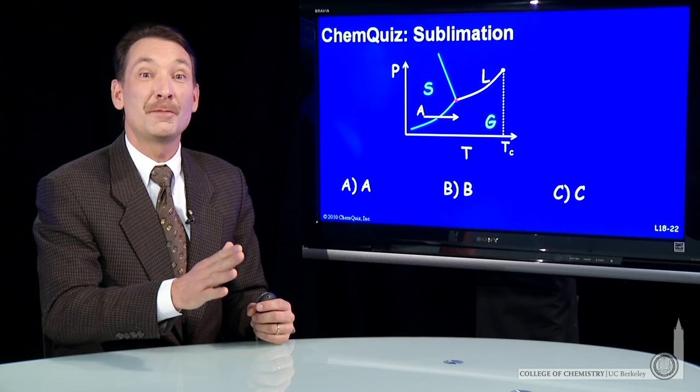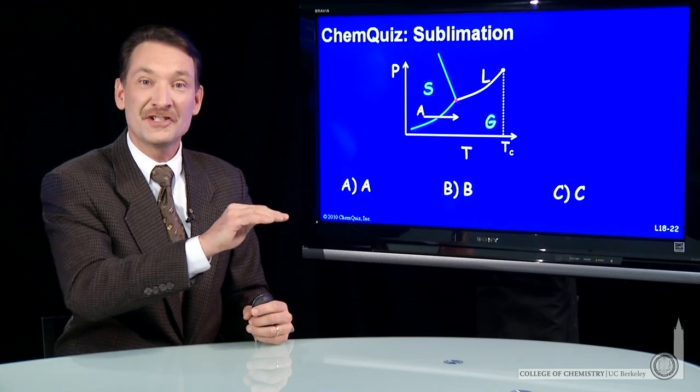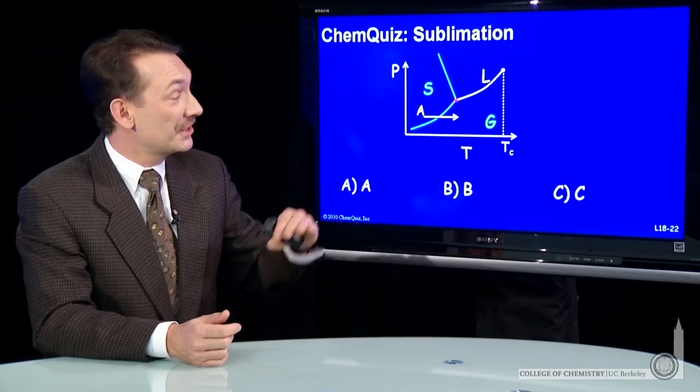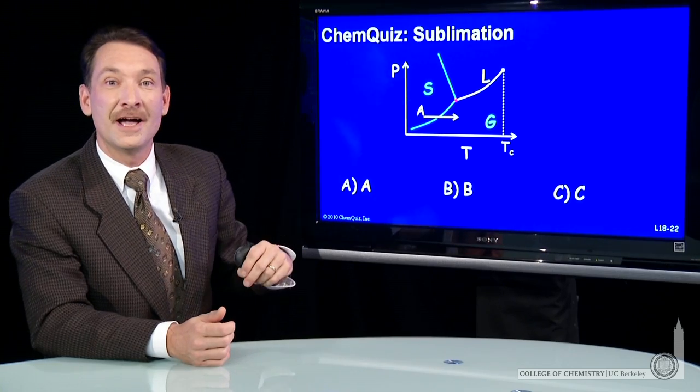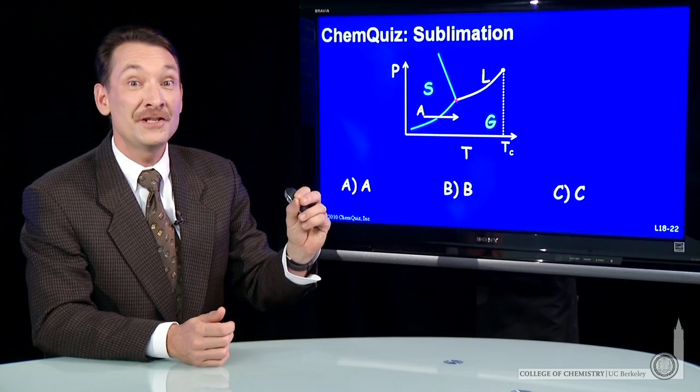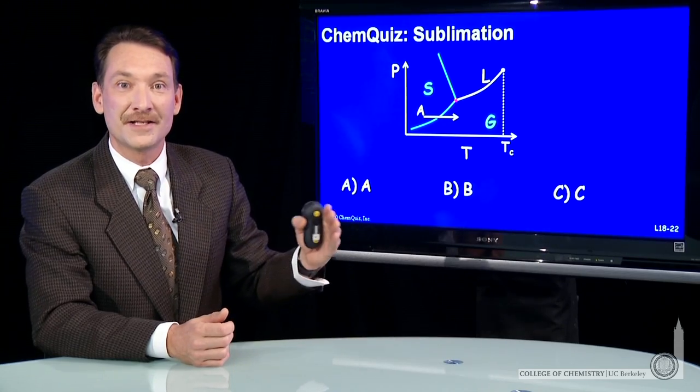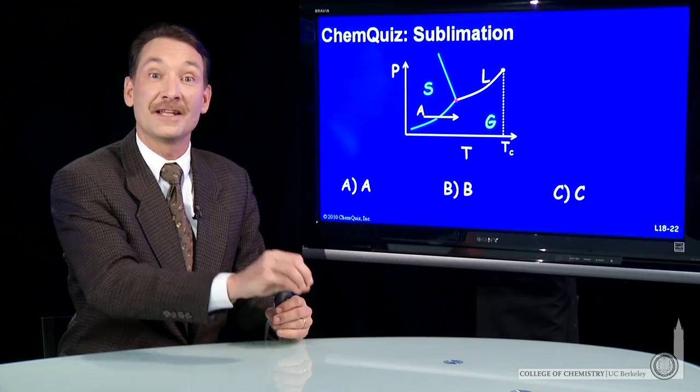We're trying to find the sublimation line, a sublimation at constant pressure transition for carbon dioxide. Well, if it's a constant pressure transition, it has to be a horizontal line. And if it's a sublimation, it must cross the solid-gas transition line. Sublimation is the conversion from solid to gas.